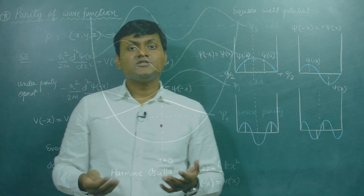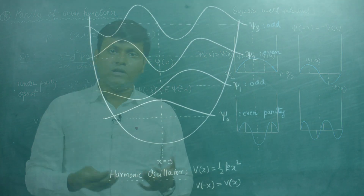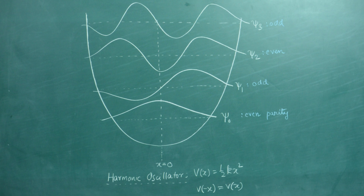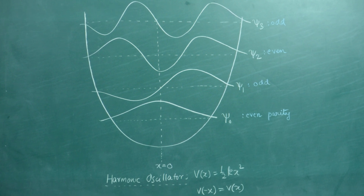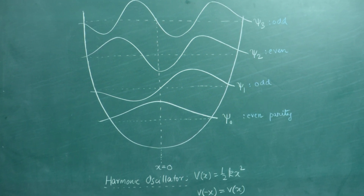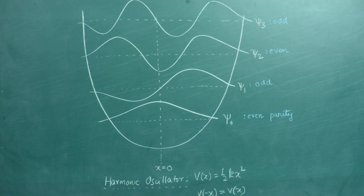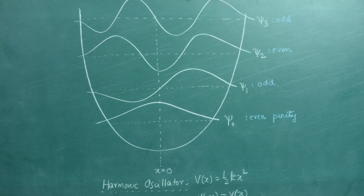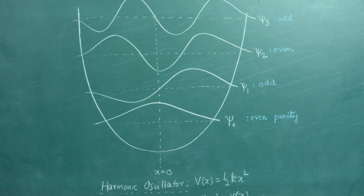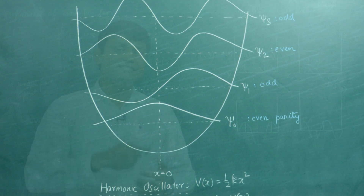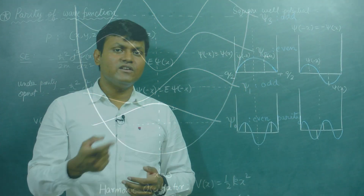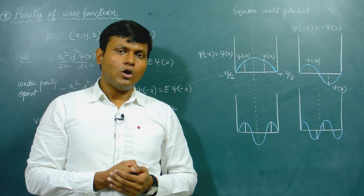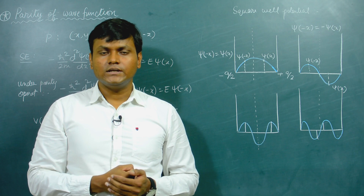Other examples also include the harmonic oscillator. Even in that case, the potential is symmetric with respect to reflection along the origin of the x axis. The ground state wave function is an even function, the first excited state is an odd function, the second excited state is even, and so on — you find alternating even and odd wave function solutions in the harmonic oscillator.